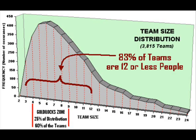You can argue whether four to nine people is the real Goldilocks zone. However, whatever it is, 12 people would seem to be the limit. In the real world, 83% of the teams are 12 people or less. This is no accident.